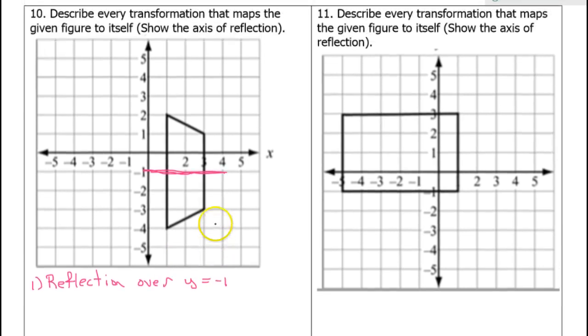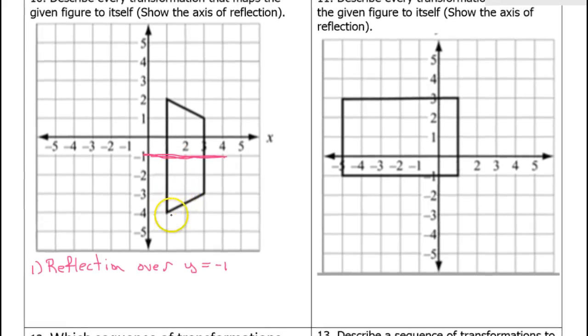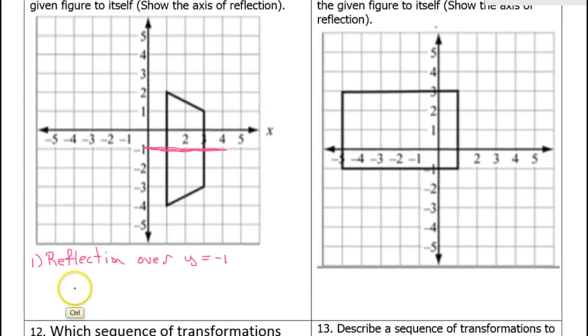Reflection over the line—a horizontal line is always y equals a number—so y equals negative one. I don't think they mean for us to include a rotation of 360 degrees, but obviously if you do a rotation of 360 degrees that's always going to map a figure onto itself. We would have to say rotation 360 degrees around the center point, which is two comma negative one.